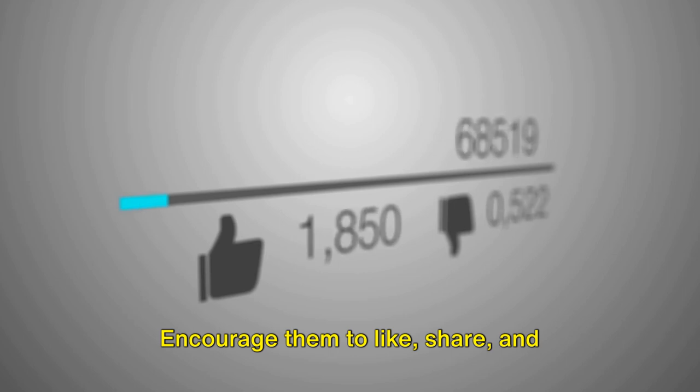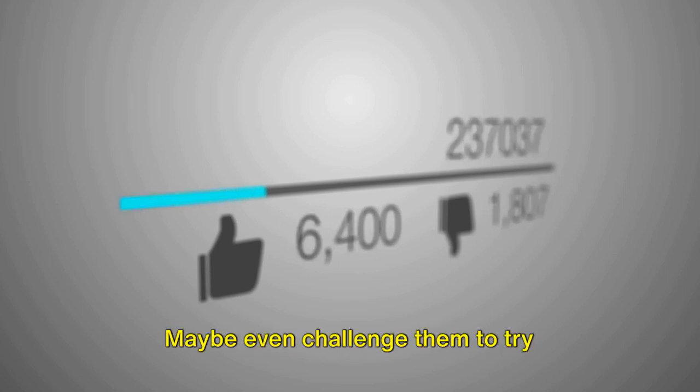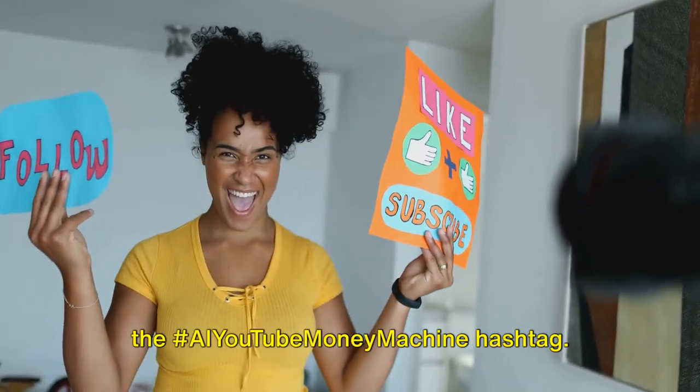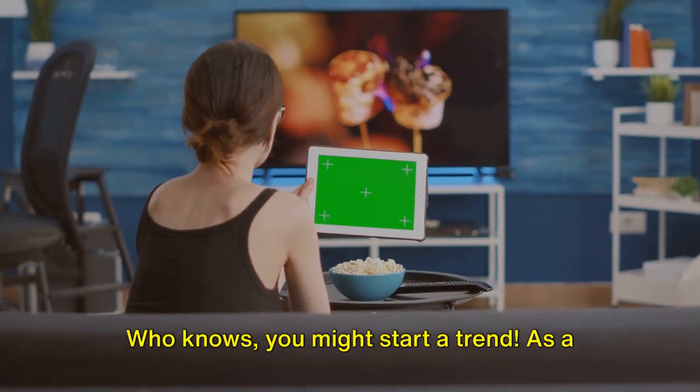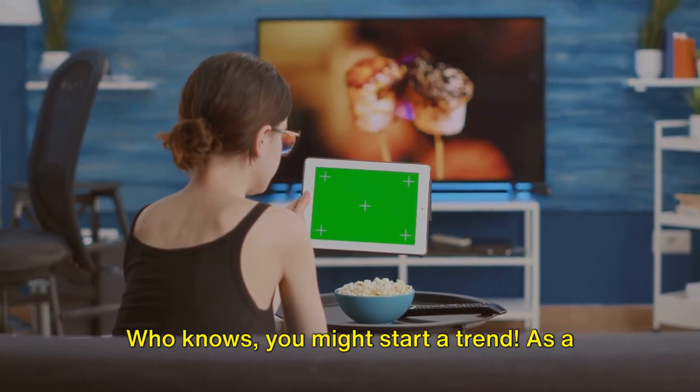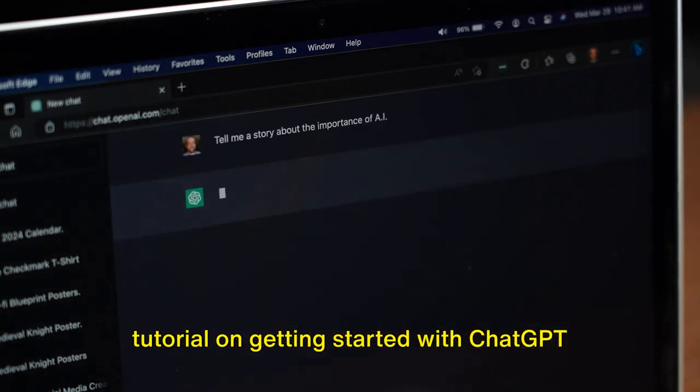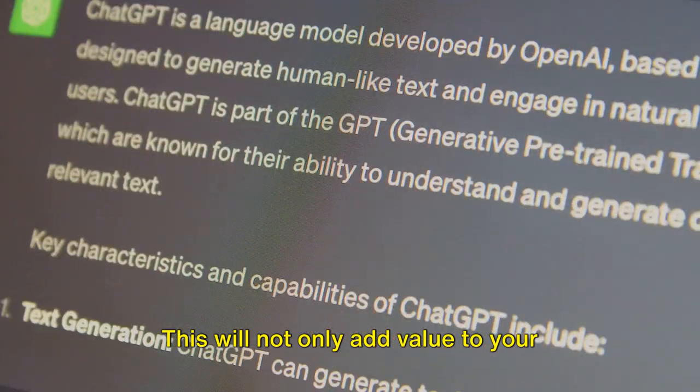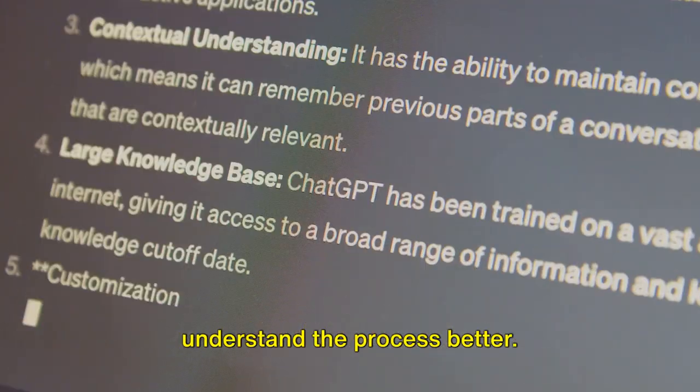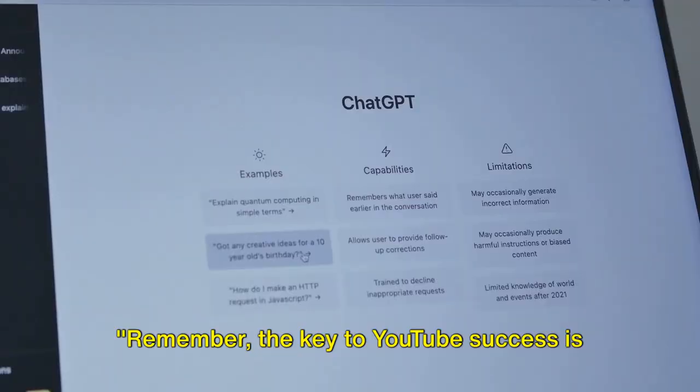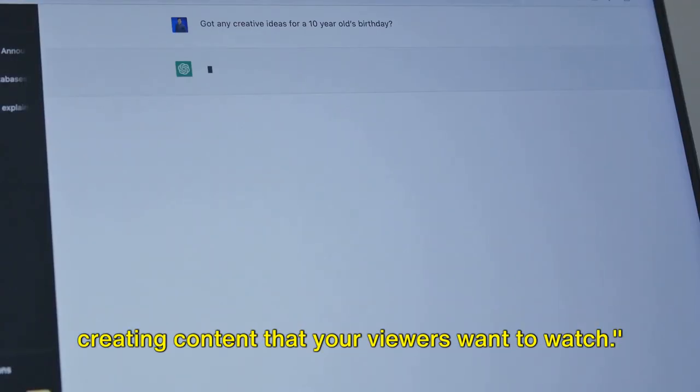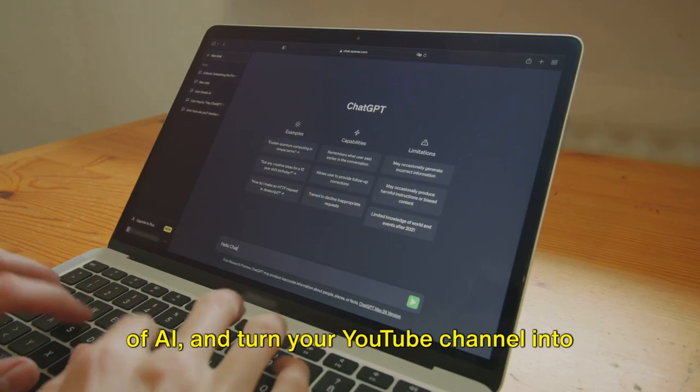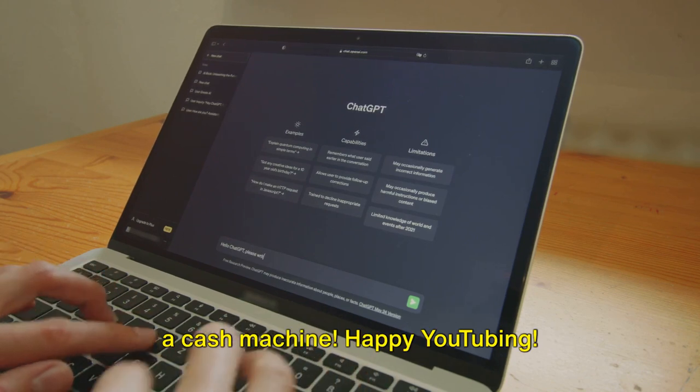And finally, engage with your audience. Encourage them to like, share, and comment on your videos. Maybe even challenge them to try AI-powered YouTube automation for themselves and share their results using the hashtag AIYoutubeMoneyMachine. Who knows, you might start a trend. As a bonus, consider offering a free guide or tutorial on getting started with ChatGPT and FlickyAI. This will not only add value to your videos but also help your viewers understand the process better. Remember, the key to YouTube success is not just about creating content, but creating content that your viewers want to watch. So stop wasting time, unleash the power of AI and turn your YouTube channel into a cash machine. Happy YouTubing!